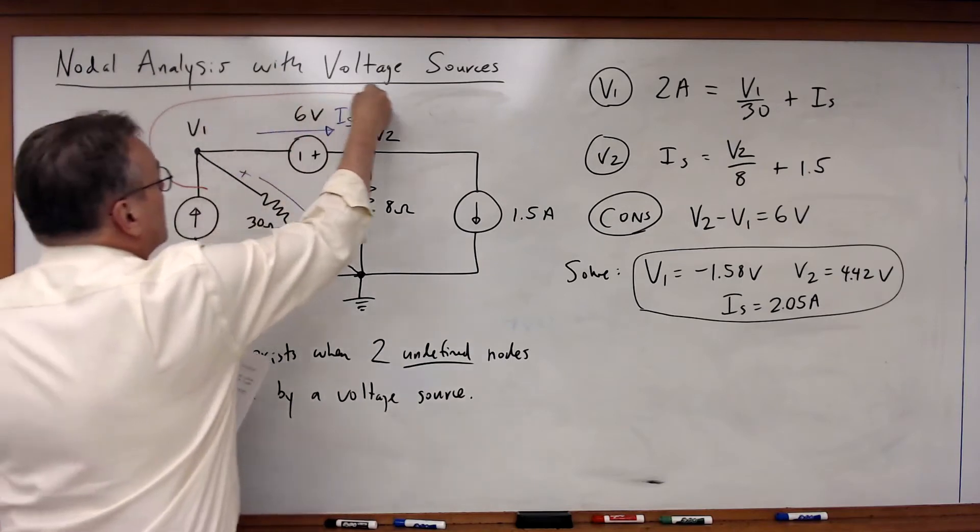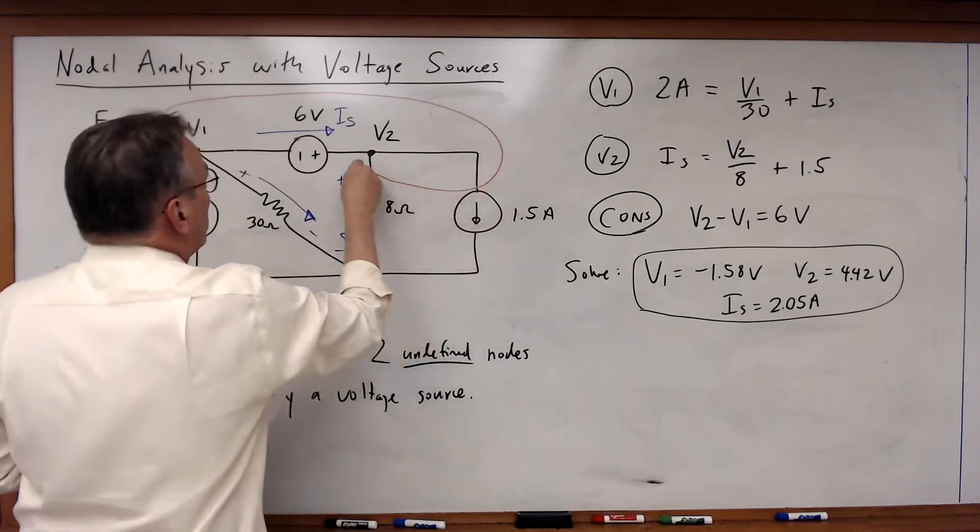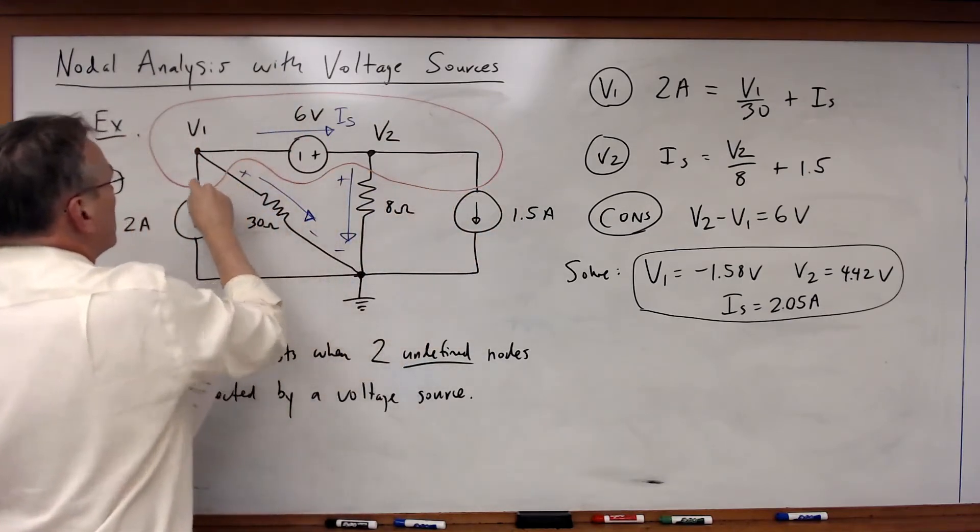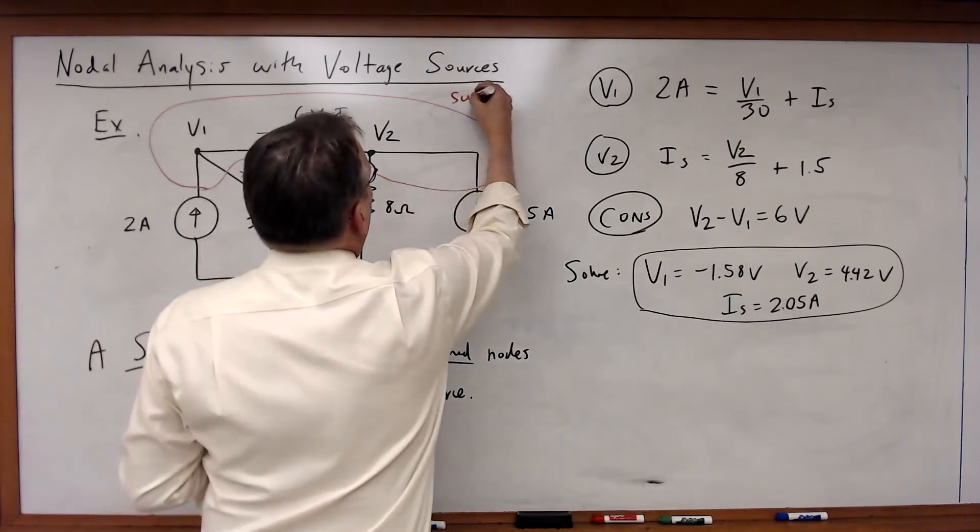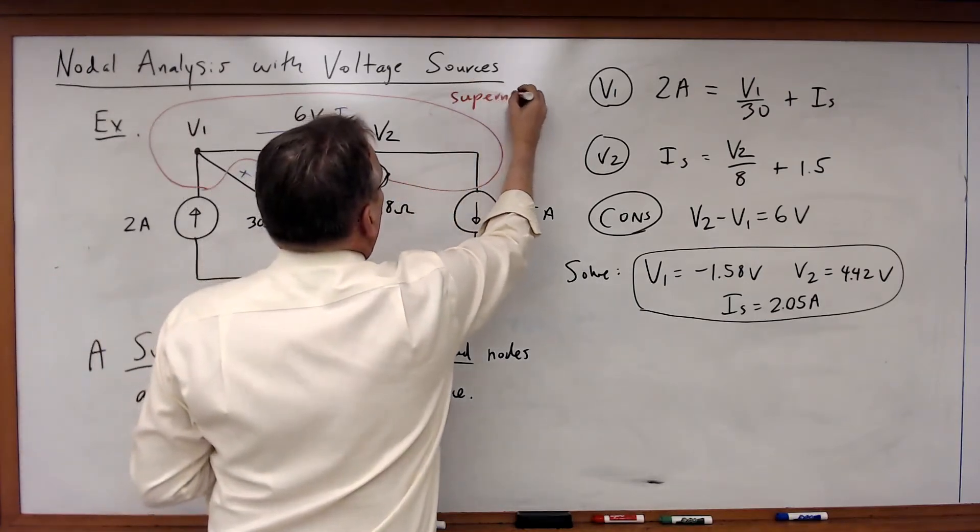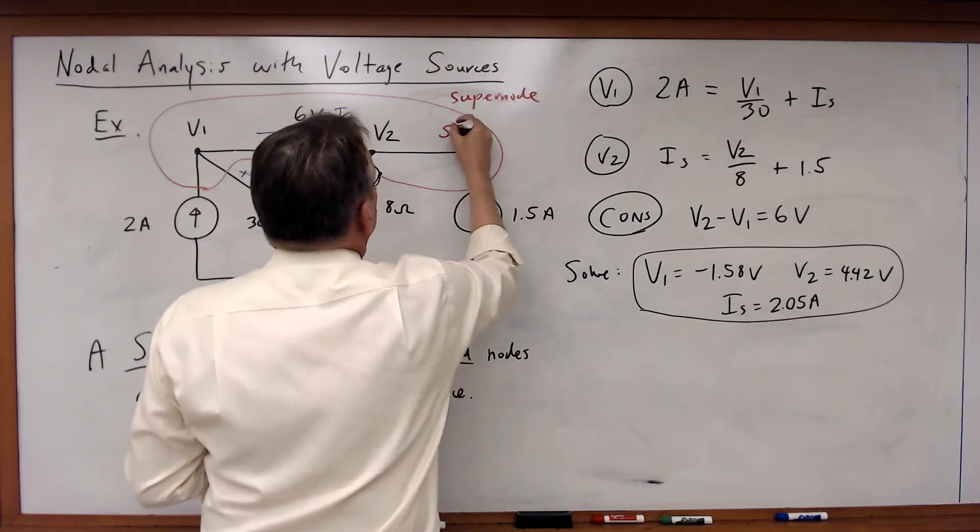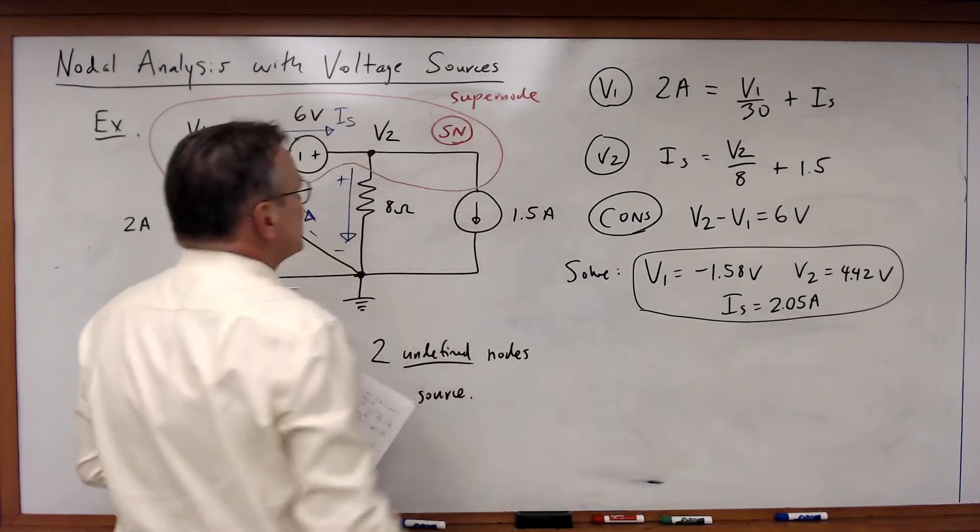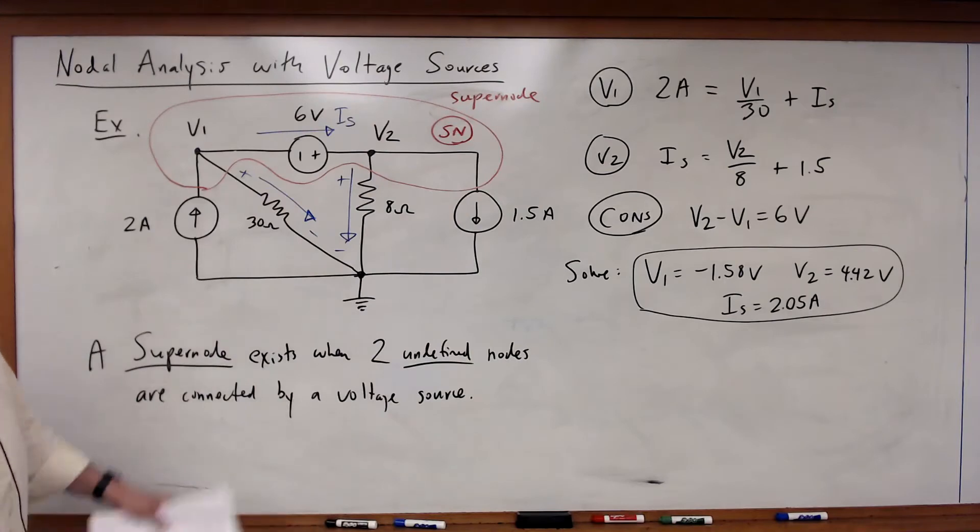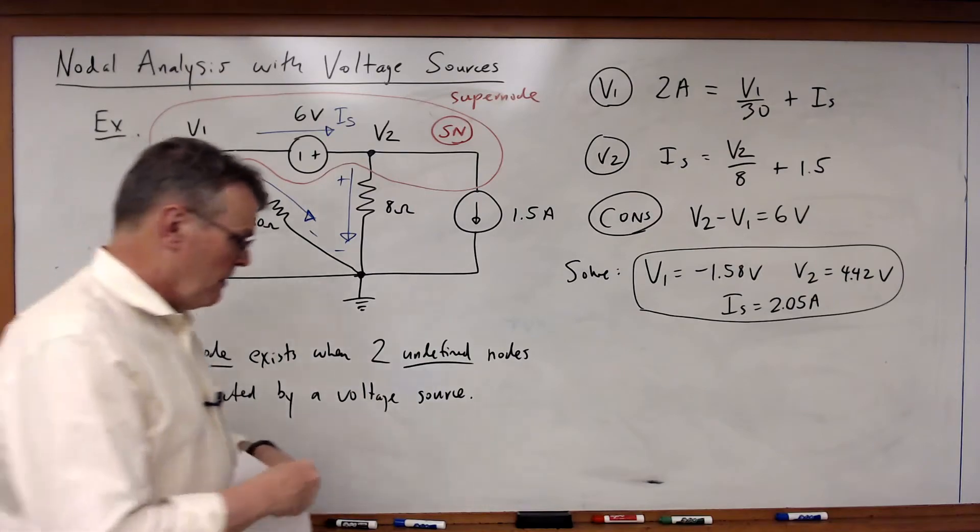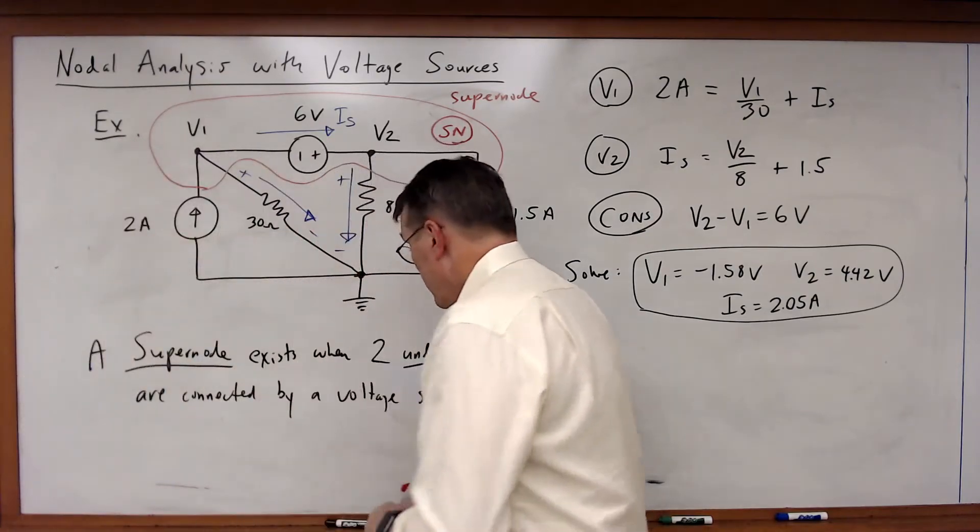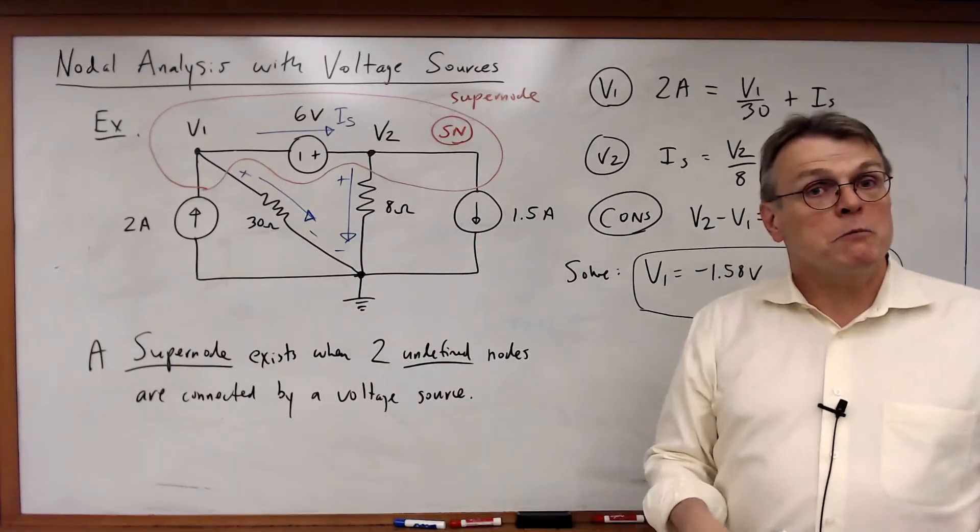V1 and V2 combine together to form a supernode. Or you'll just sometimes see it abbreviated as SN, a supernode. They're linked together. Why is a supernode important? Well, because KCL holds for a supernode.